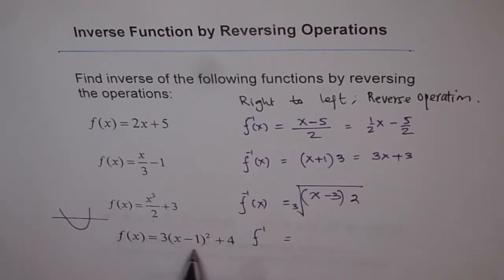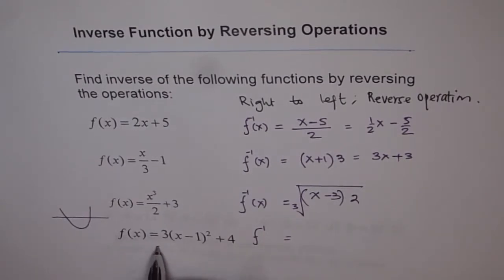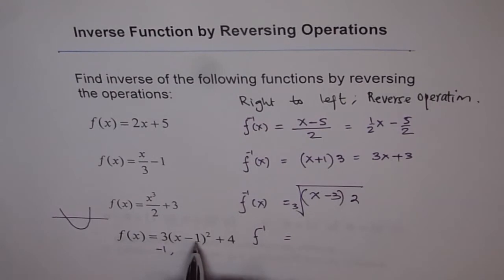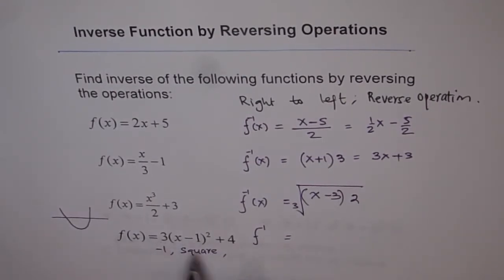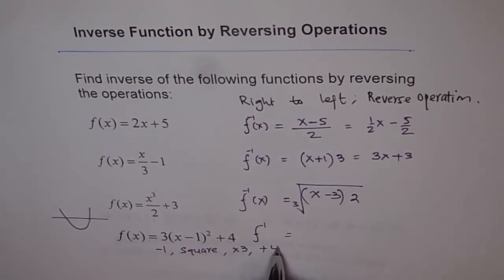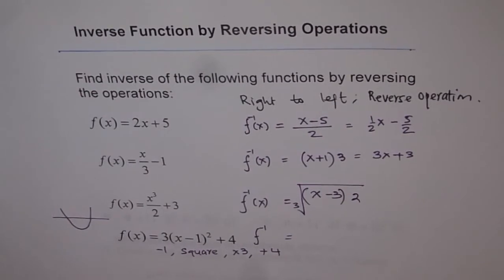Let me write down this operation because there are many operations involved here. If I get an input x, what do I do? First operation is, take away 1. Second operation is, square it. And third operation is, times 3. And the fourth operation is, plus 4. So these are the operations in sequence performed to get f of x of the given function.